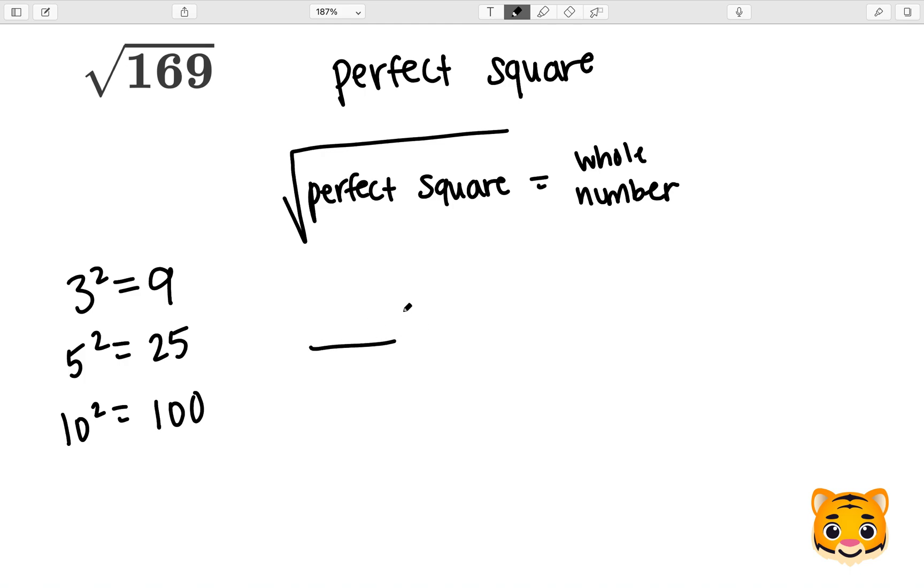Now we want to think about what number times itself will give us 169. The answer to this question is 13 times 13. We can show this by multiplying 13 times 13. 3 times 3 gives us 9, 1 times 3 gives us 3. At our 0 placeholder, 1 times 3 gives us 3, and 1 times 1 gives us 1.